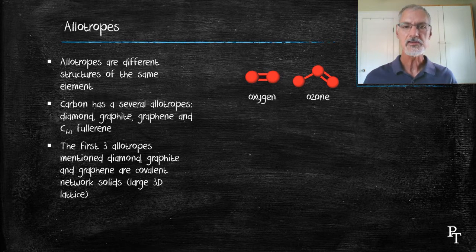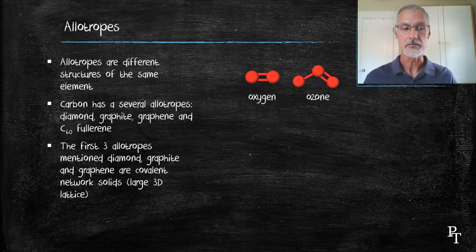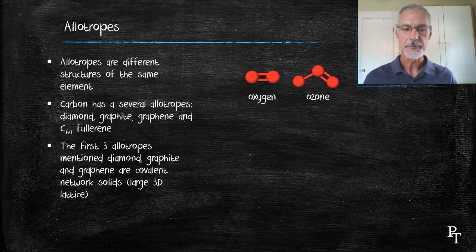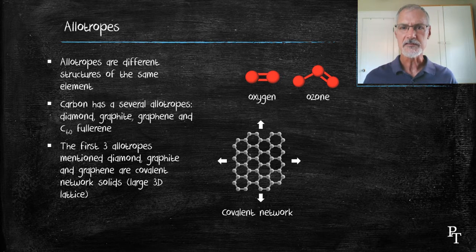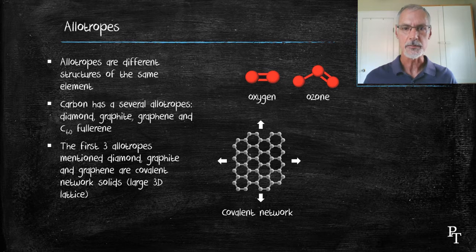Now the first three allotropes that I've mentioned, the diamond, the graphite, and the graphene, form what we call covalent network solids. That means they don't have any definitive formula beyond that they contain, in this case, carbon.